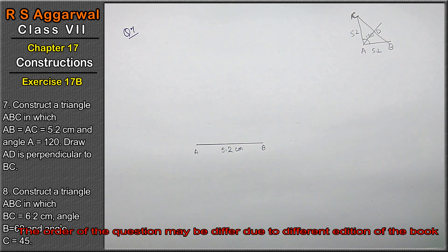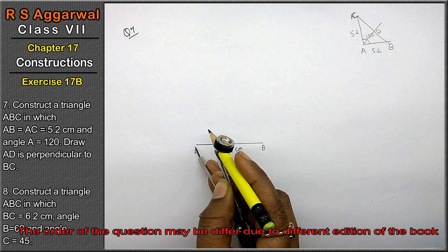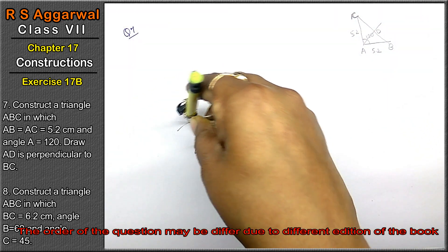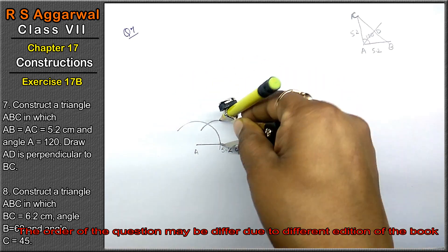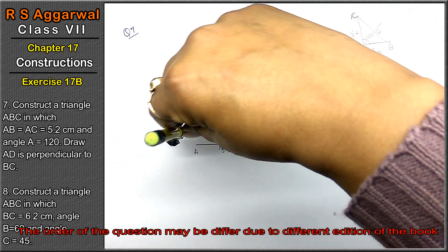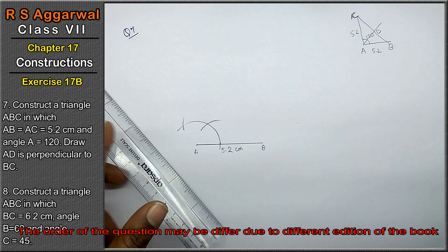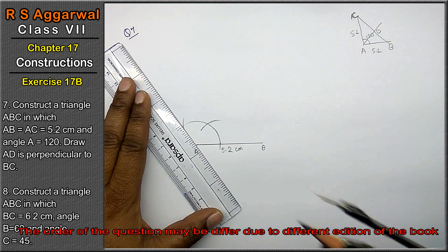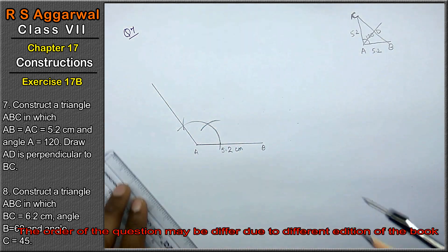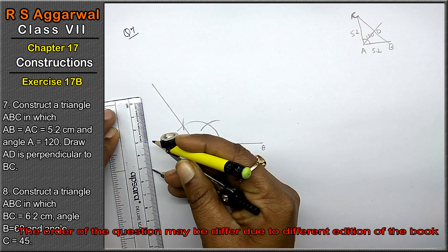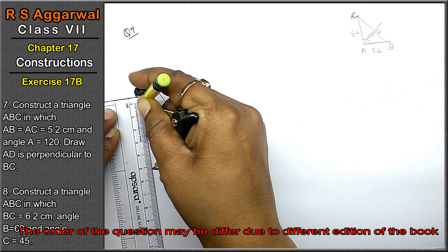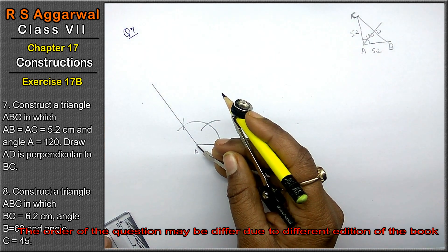Now we have to make AC, that is 120 degree angle on A. So, we have to make an arc. We have to cut an arc.